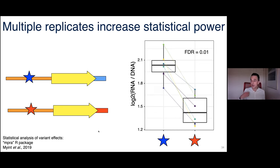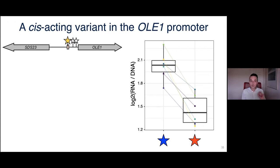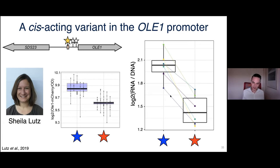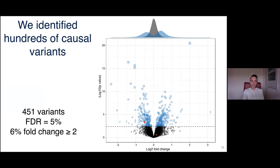The data looks like this for one variant pair: RNA counts, DNA counts, a log ratio, and that ratio for the lab allele versus the wine allele. With replicated experiments and proper statistical analysis, we can call a statistically significant difference between alleles. This particular variant resides in the promoter of the OLE1 gene in a known regulatory element, and Sheila Lott had independently identified this same variant as responsible for a local eQTL — showing nice concordance between the MPRA and the genome.